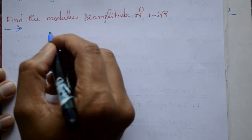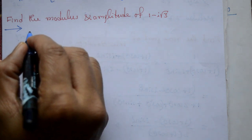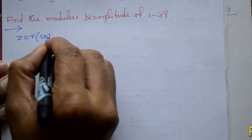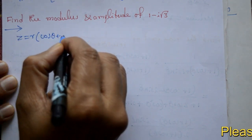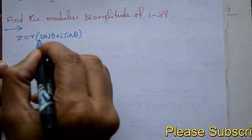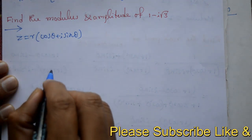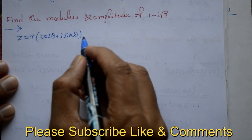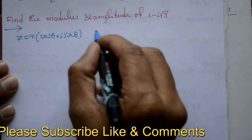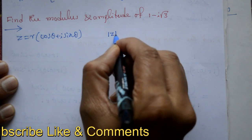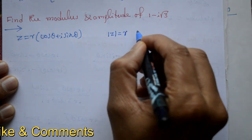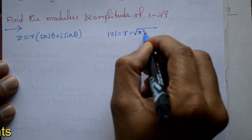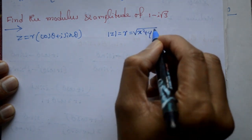Now, see the polar form of complex number is z is equal to r into cos theta plus i sin theta. Hamko r and theta chahiye. Find it karke is me substitute karna hai. So mod z is equal to r, means square root of x square plus y square.